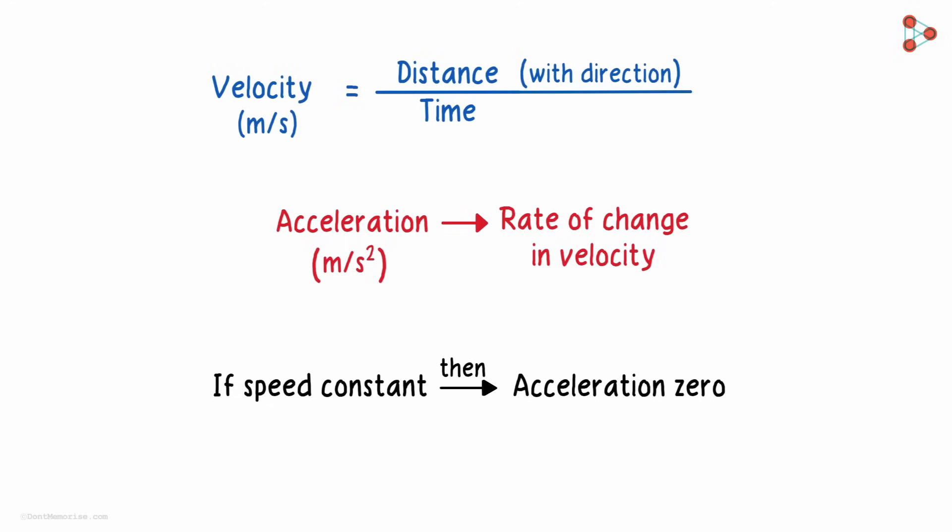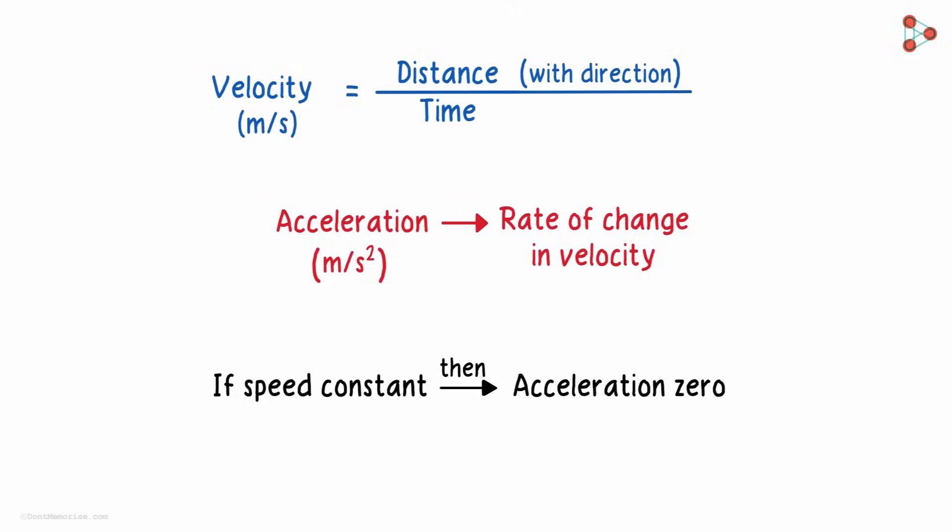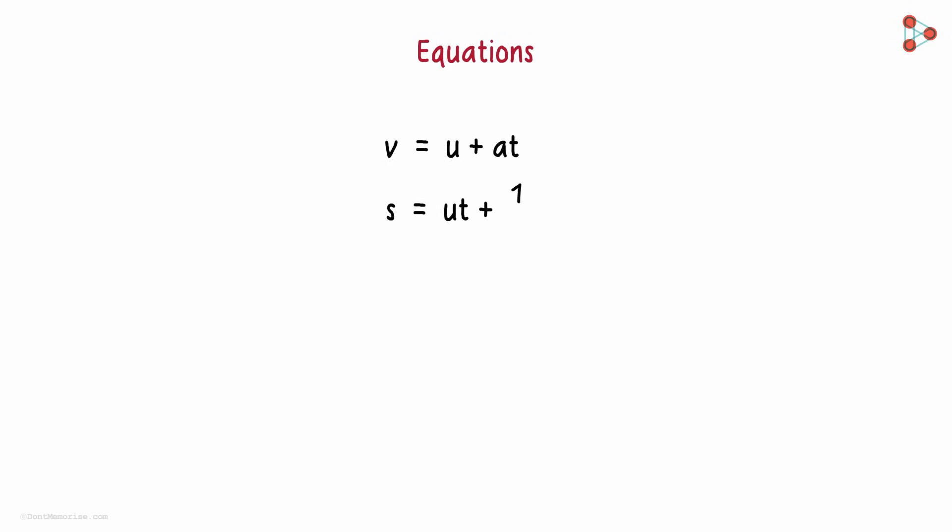Now what we will see is the relation between all these when an object moves along a straight line with uniform acceleration. These are three important equations we come across in physics when we learn about motion: v equals u plus at, s equals ut plus one half at squared, and 2as equals v squared minus u squared.